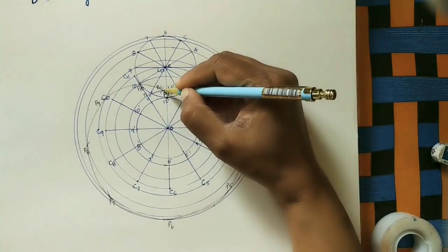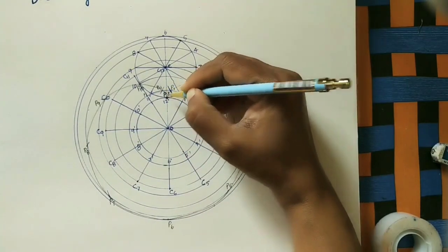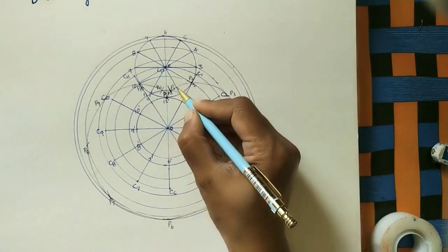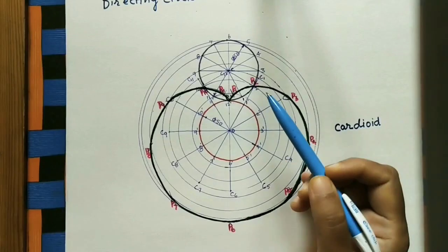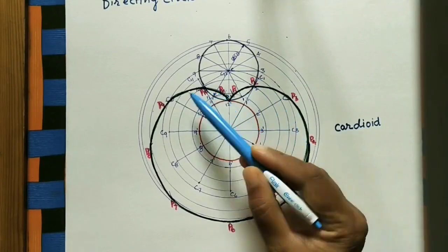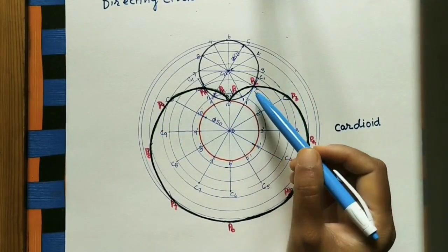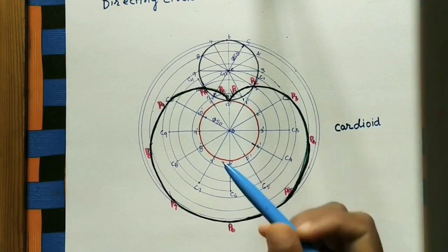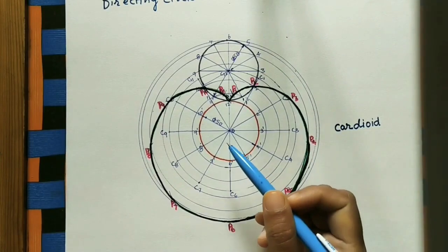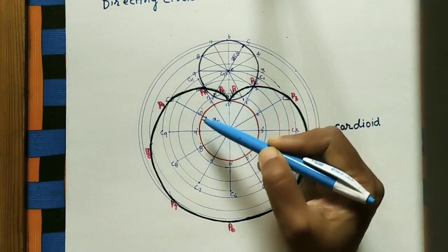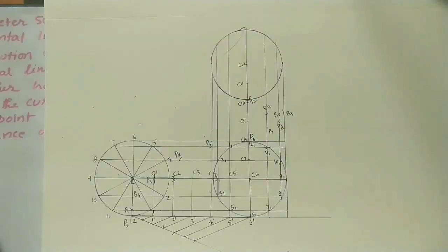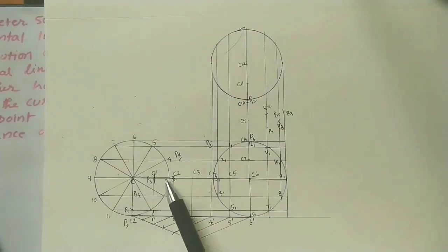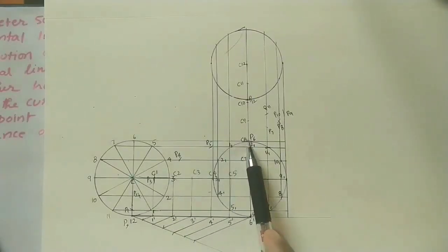Here we are getting the epicycloid shape. This final curve shape is called quadroid. We are getting this quadroid when the directing circle and rolling circle diameters are the same. If we join all the points P1, P2, P3, P4, P5, P6, P7, P8, P9, P10, P11, P12, we will get the cycloid.